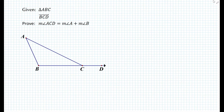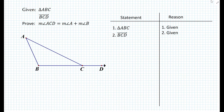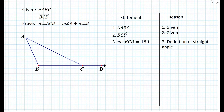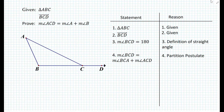So let's say we're given triangle ABC as shown in the figure. We're also given ray BCD. How would we prove that the measure of angle ACD is equal to the measure of angle A plus the measure of angle B? Let's set up a statement-reason table and write down the first two givens. From ray BCD, we know that the measure of angle BCD must be equal to 180 because that is the definition of a straight angle. We also know that the measure of angle BCD is equal to the measure of angle BCA plus the measure of angle ACD because of the partition postulate. Then we simply substitute to write that the measure of angle BCA plus the measure of angle ACD is equal to 180.